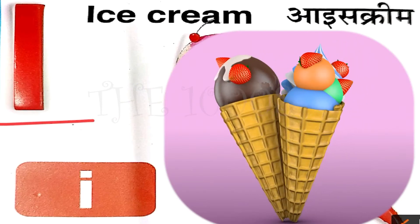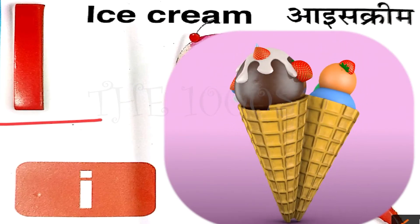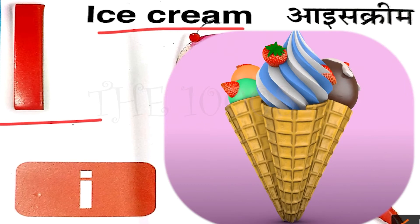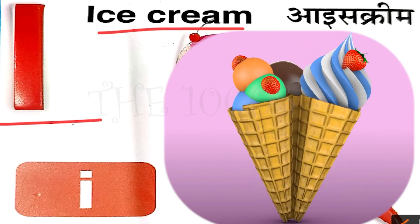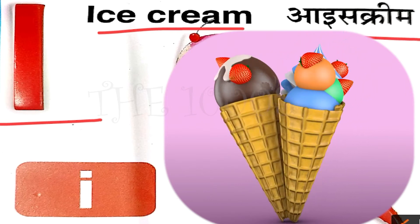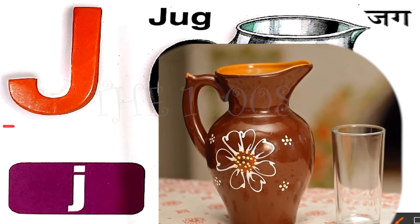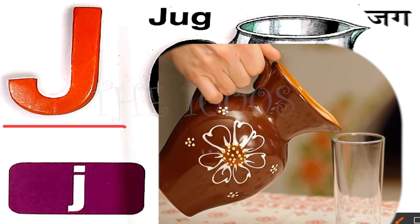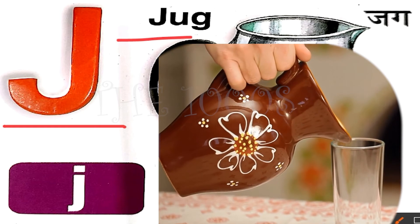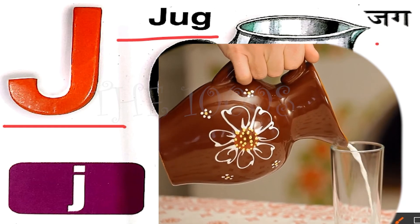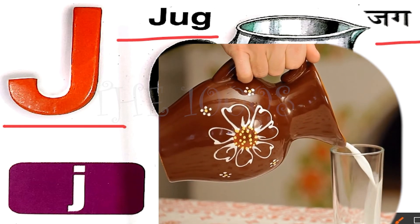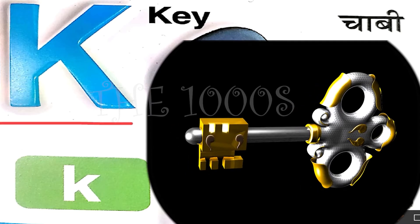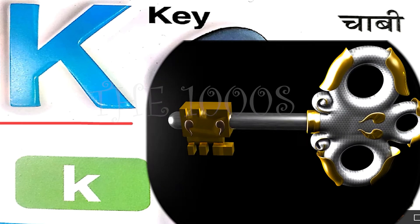I for ice cream, ice cream means ice cream. J for jug, jug means jug.